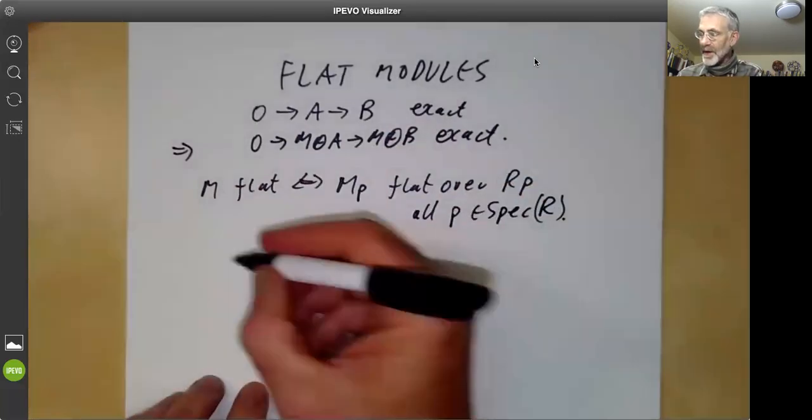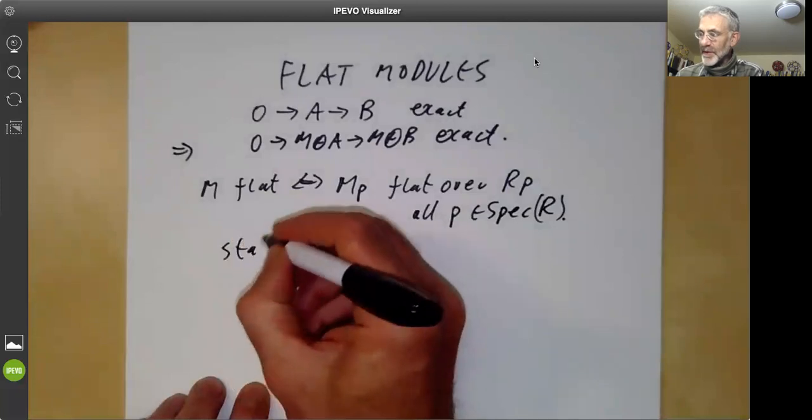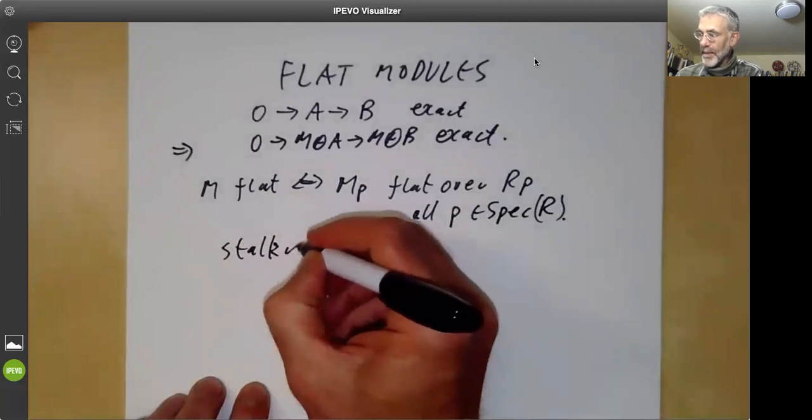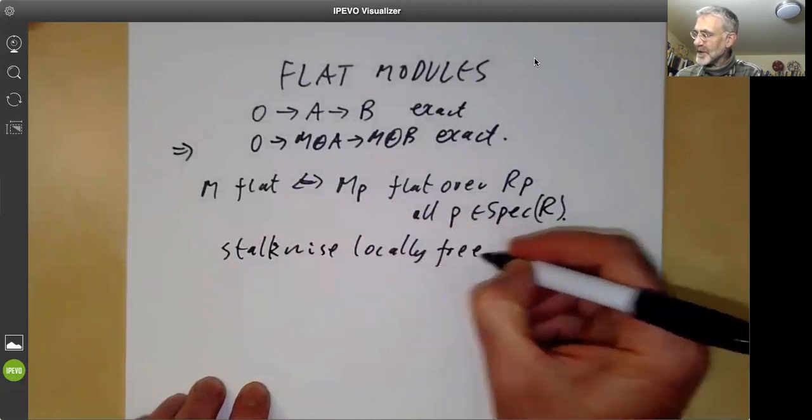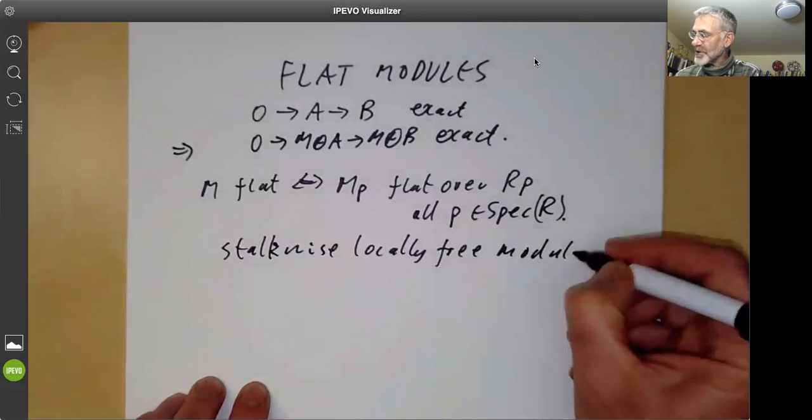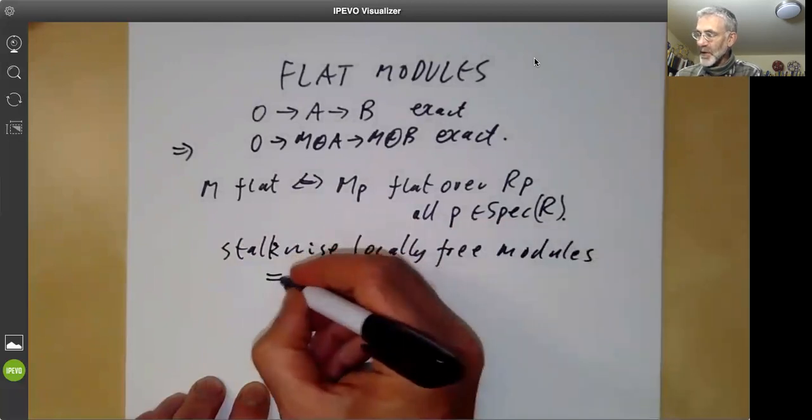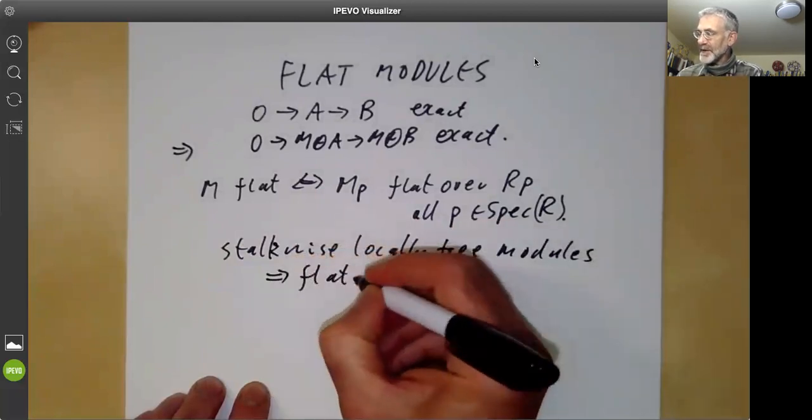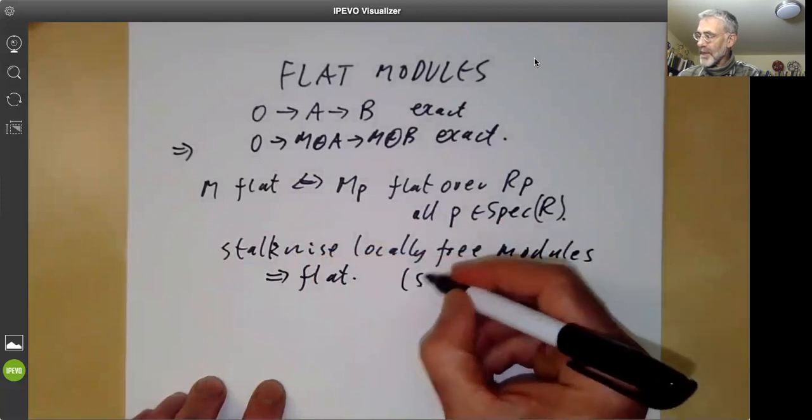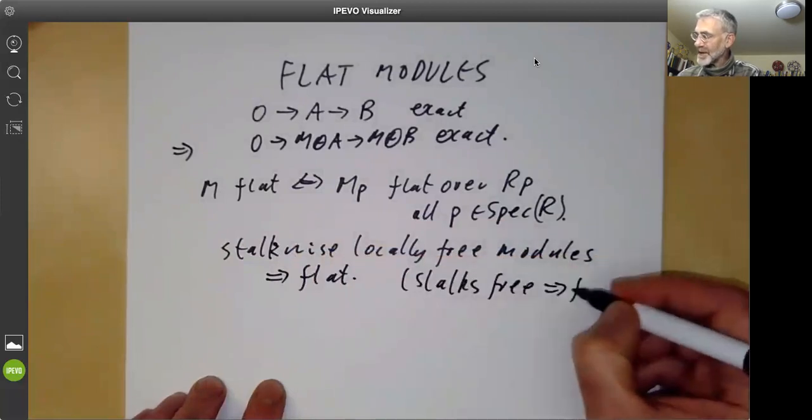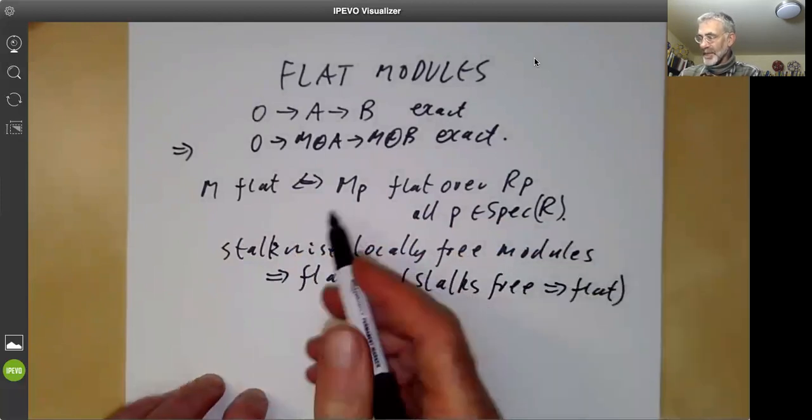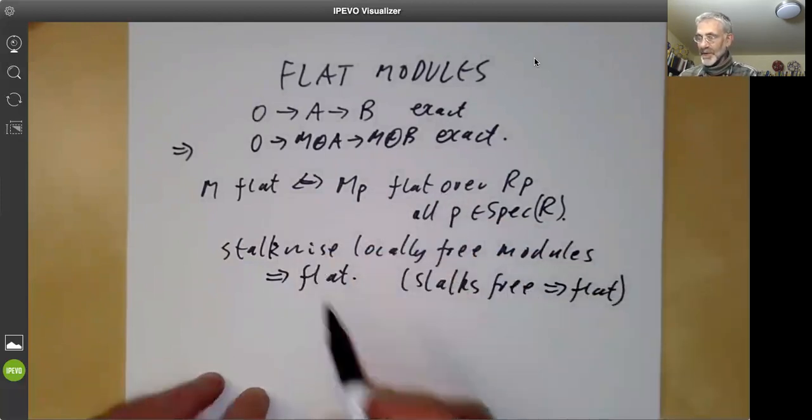In particular, we see that stalkwise locally free modules, which we discussed last lecture, are all flat because the stalks are free. Obviously this implies that they are flat. So since all the stalks are flat, the module is flat.